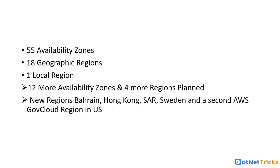AWS Global Infrastructure currently covers 55 availability zones, 18 geographic regions, 1 local region, and there are plans to bring up 12 more availability zones in 4 additional regions.